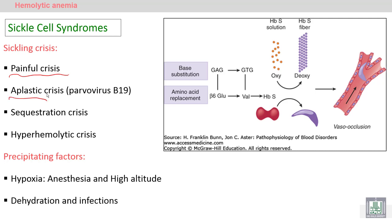An aplastic crisis occurs when there is superinfection by parvovirus B19. A hyper-hemolytic crisis involves increased bone marrow activity to compensate for the hyper-hemolysis. We need to differentiate between aplastic crisis and hyper-hemolytic crisis using specific tests. The last type is the sequestration crisis — excessive accumulation of sickle cells in organs leading to organomegaly. Precipitating factors include hypoxia, high altitude, and anesthesia during operations.